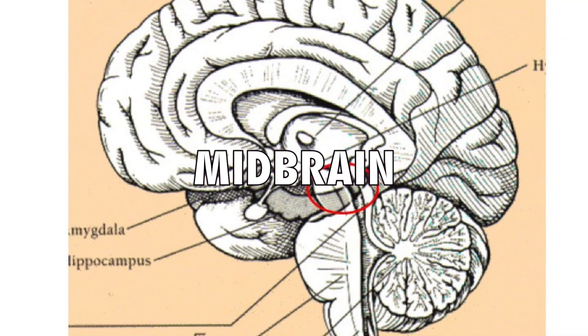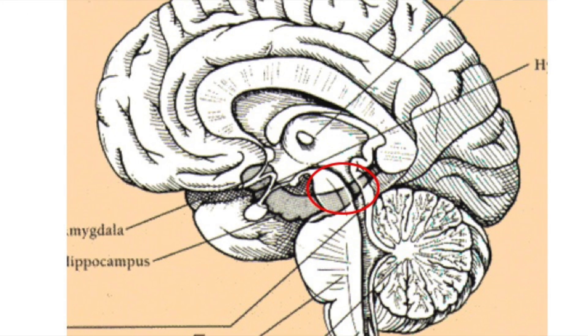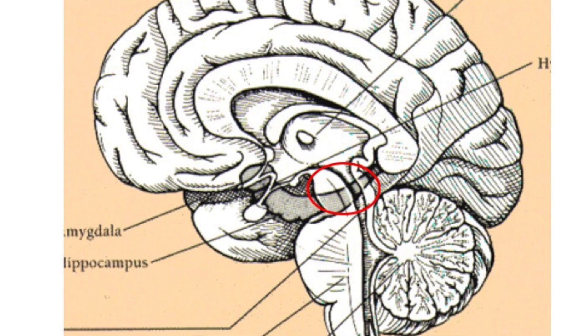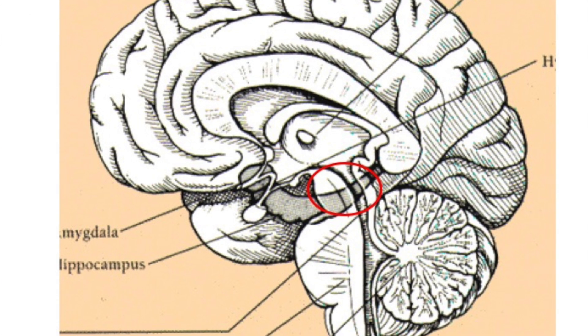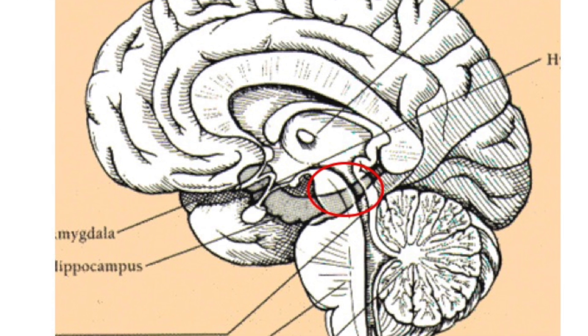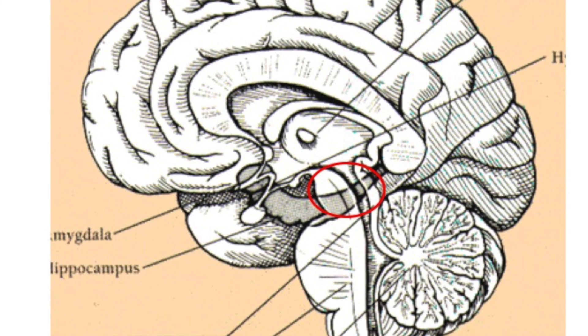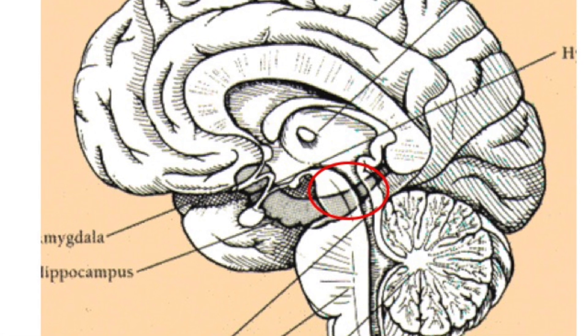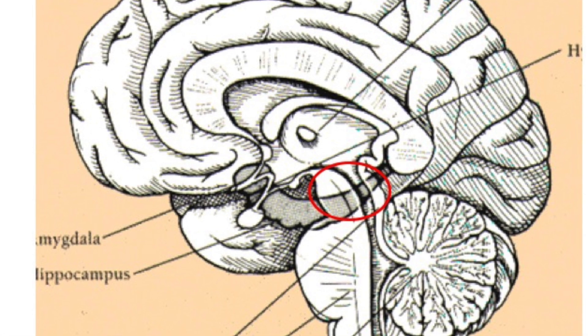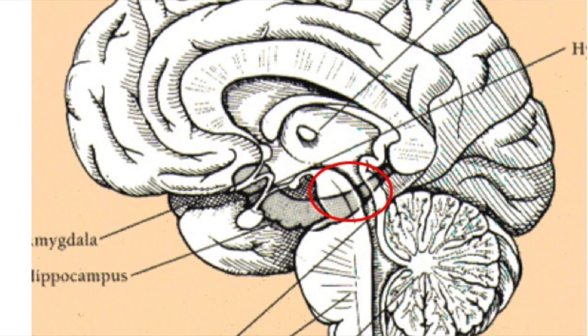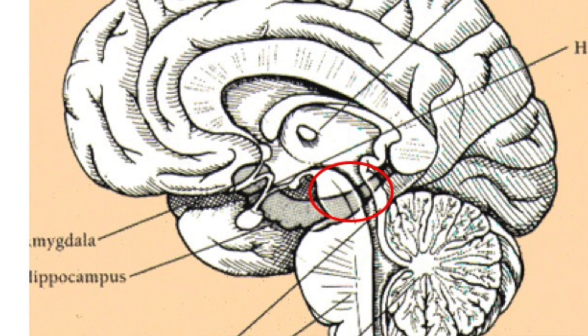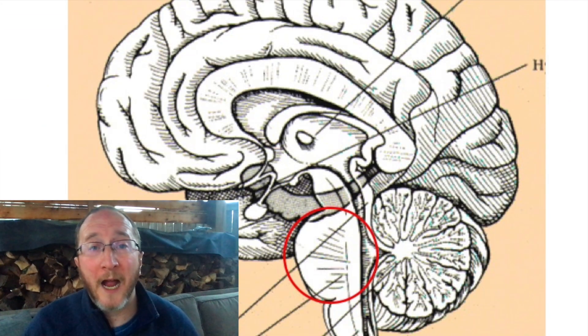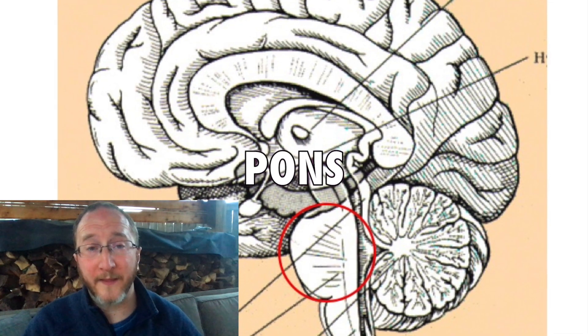We divide the brain stem into several different parts. Here we're highlighting the midbrain, circled in red, which has two cranial nerve nuclei involved in moving your eyeballs — those cranial nerve nuclei run nerves that make your eyeballs move in certain directions. Right below the midbrain is the pons, another portion of the brain stem with several cranial nerve nuclei involved in lots of different functions, including eye movements as well as some control over your face and taste.